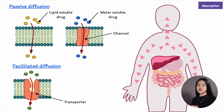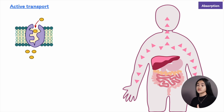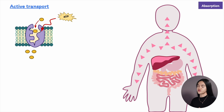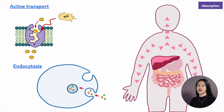In facilitated diffusion, larger water-soluble and polar molecules require the help of a channel or transporter. In active transport, drugs are transported against their concentration gradient, so energy — ATP — is required. Specific carrier proteins use ATP to move the drug into the cell. For molecules that are so large, the process of endocytosis is needed, where the drug is engulfed by the plasma membrane.